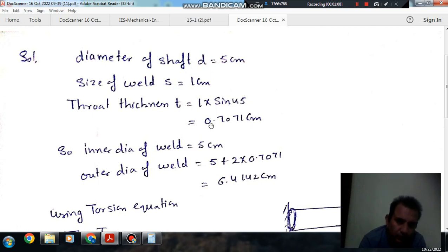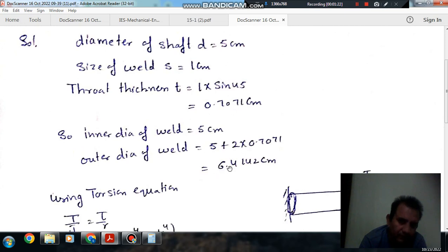Since the throat size is not small compared to this diameter, this diameter can be taken as inner diameter of the weld. The outer diameter of the weld is 5 plus 2 times 0.7071 cm, which equals 6.4142 cm.